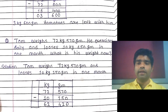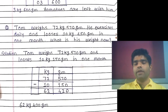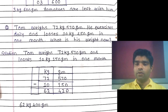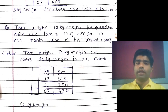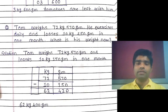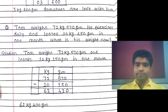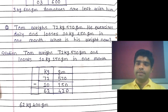Arrange the column in kilogram and gram: write 72 on the kilogram side and 570 on the gram side. For 10 kg 150 grams, write 10 on kilogram and 150 on gram. Now solve: starting from grams — 0 minus 0 is 0, 7 minus 5 is 2, 5 minus 1 is 4. In kilograms: 2 minus 0 is 2, 7 minus 1 is 6. The current answer is 62 kg 420 grams.